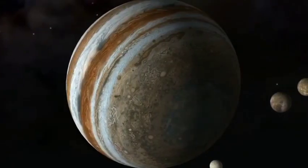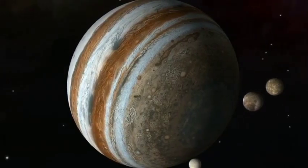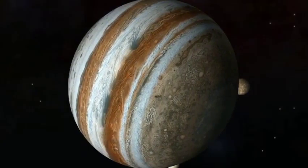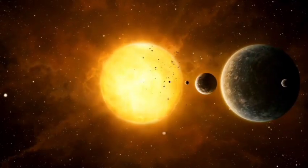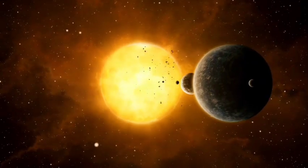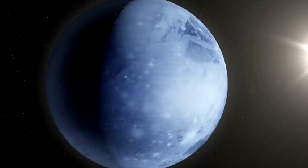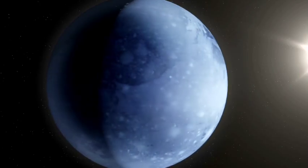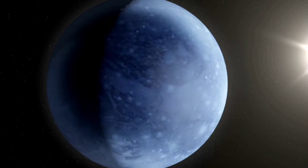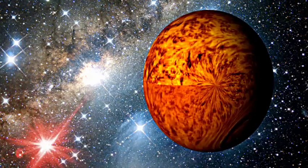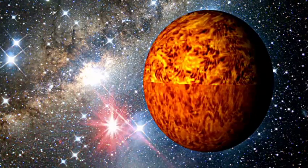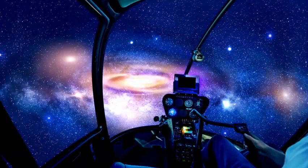The excitement doesn't stop there. The James Webb Telescope has already revolutionized our understanding of exoplanets, capturing data about their atmospheres and compositions. It recently found definitive evidence of carbon dioxide in the atmosphere of a planet 700 light-years away, marking a major milestone in the search for extraterrestrial life. With more than 4,000 exoplanets discovered so far, the universe is teeming with possibilities.